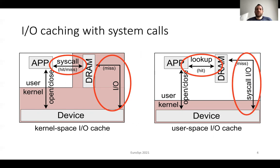A user space cache is generally used to store application-specific deserialized data. To avoid system calls for hits and enable customization, today applications tend to use a user space cache. However, it still requires system calls for misses. On the other hand, software cache lookups in the common path introduce overheads, especially in the case of fast storage devices.